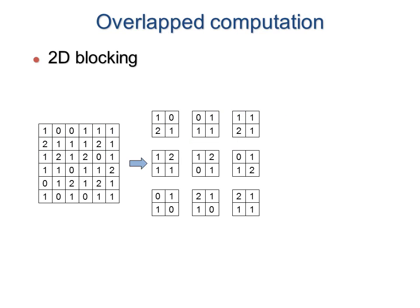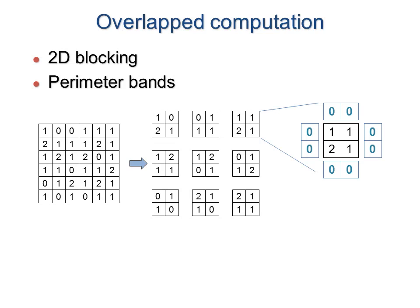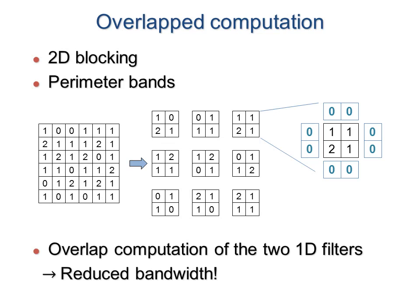Our contribution is to introduce 2D blocking, whereby each block stores data along a perimeter band. These bands are used to overlap the computation of the successive 1D filters, thus reducing the bandwidth bottleneck.